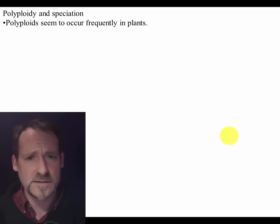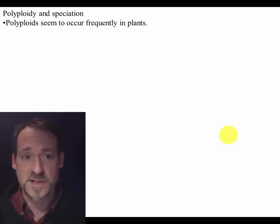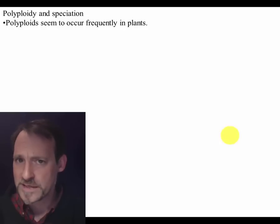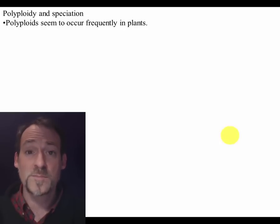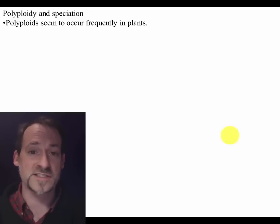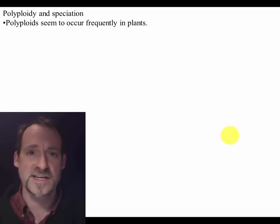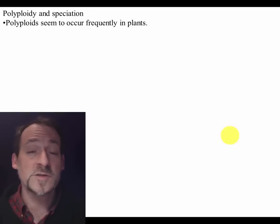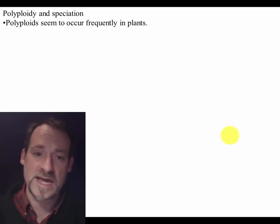This has actually added quite a bit to the diversity of certain groups of organisms on this planet, most notably plants. A lot of very important plants in the world are polyploids — that is, they've had their genome doubled (that's a tetraploid), or in some cases tripled (that's a hexaploid), or in some cases multiplied even more than that.